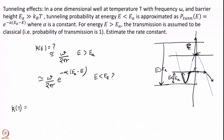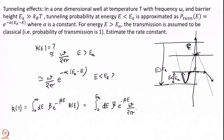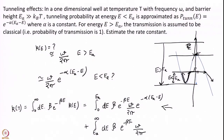So K(T) becomes the integral from 0 to infinity of rho(E) times K(E) dE. Rho(E) is beta e to the power of minus beta E. K(E) is divided into two parts: from 0 to Ea, we use omega over 2 pi times e to the power of minus alpha(Ea minus E); and from Ea to infinity, we use omega over 2 pi. What we discussed several modules ago ignored the first part — no tunneling, only the second part. But now we have the tunneling contribution as well.